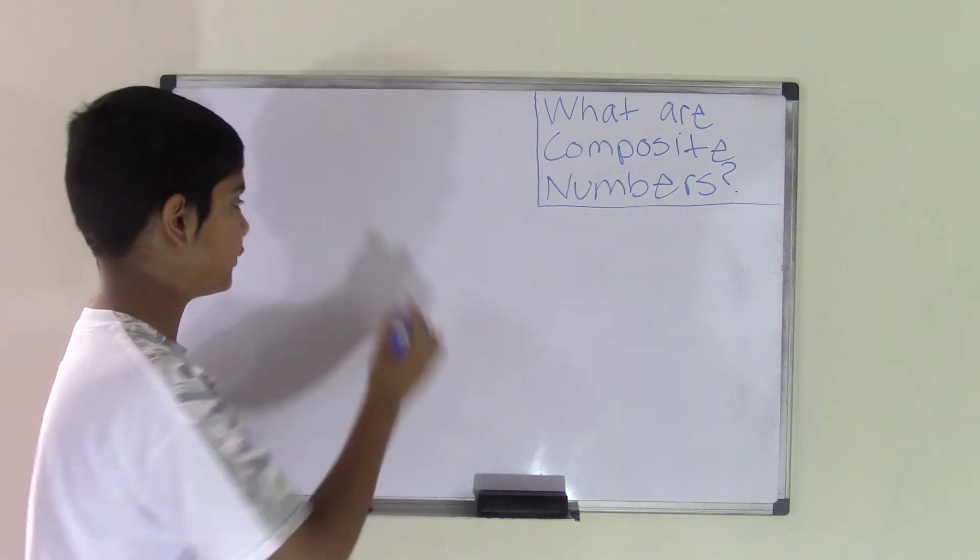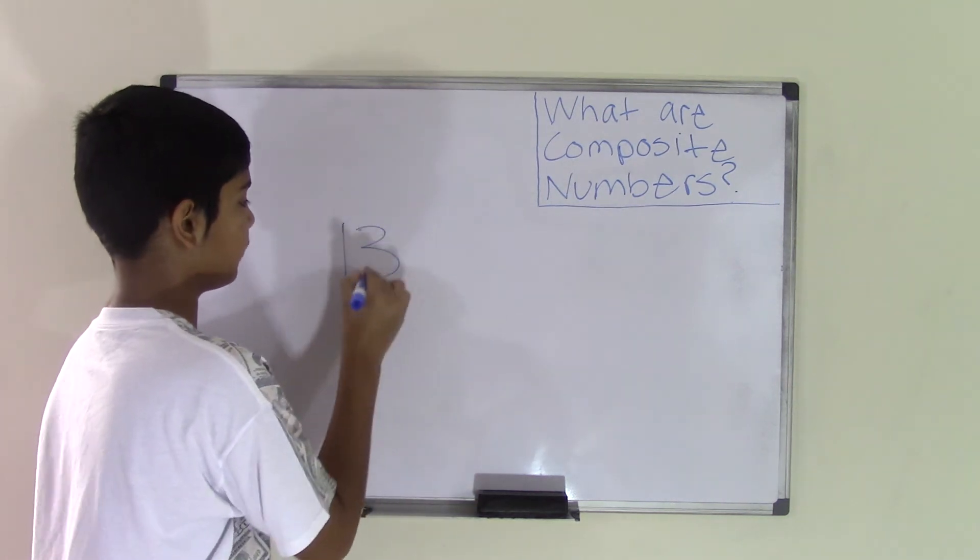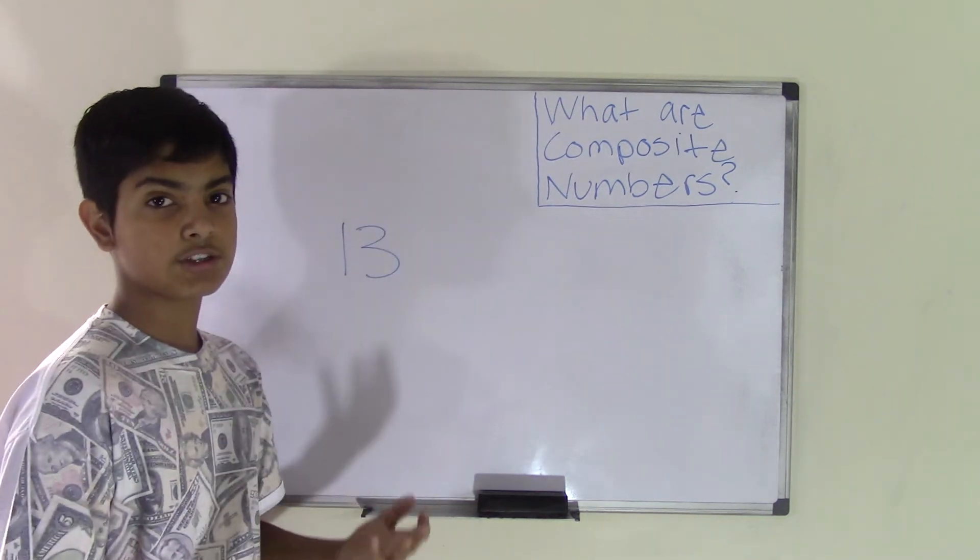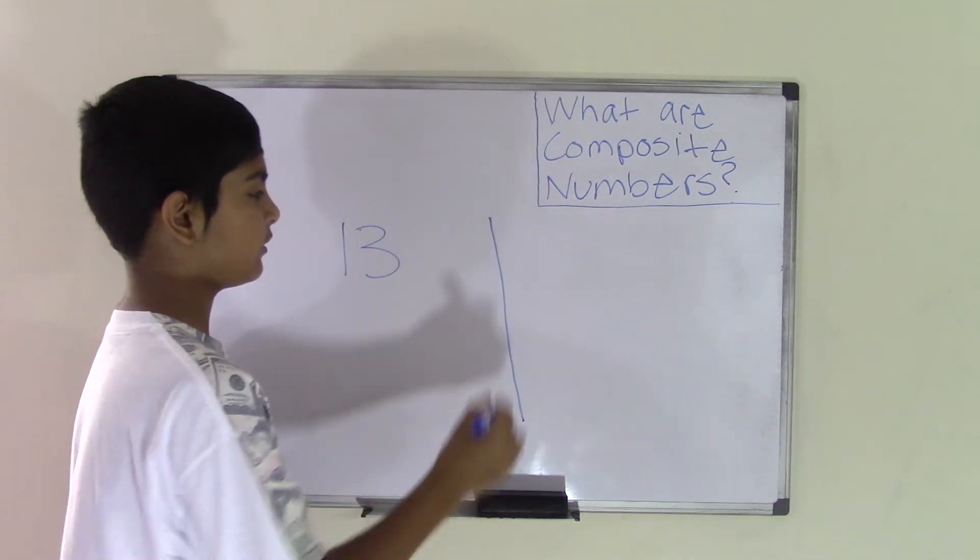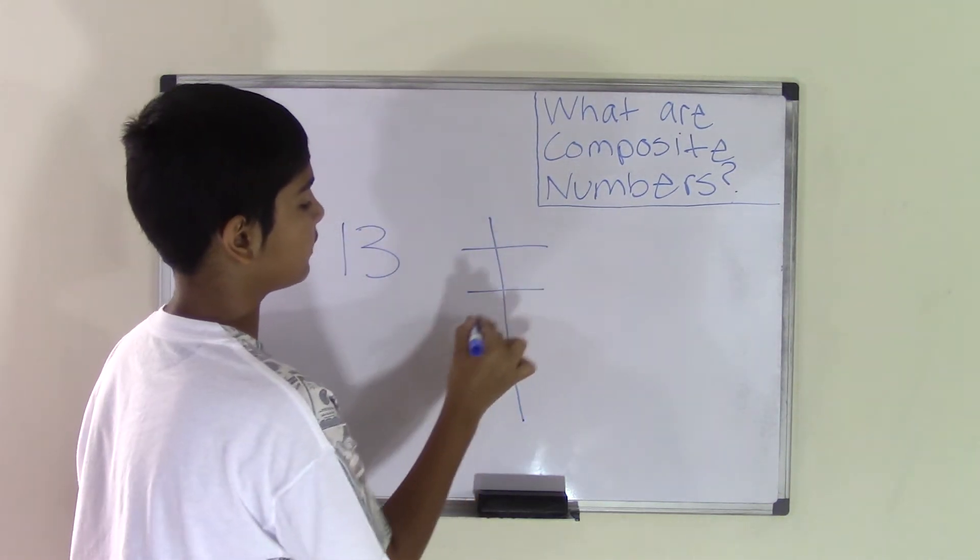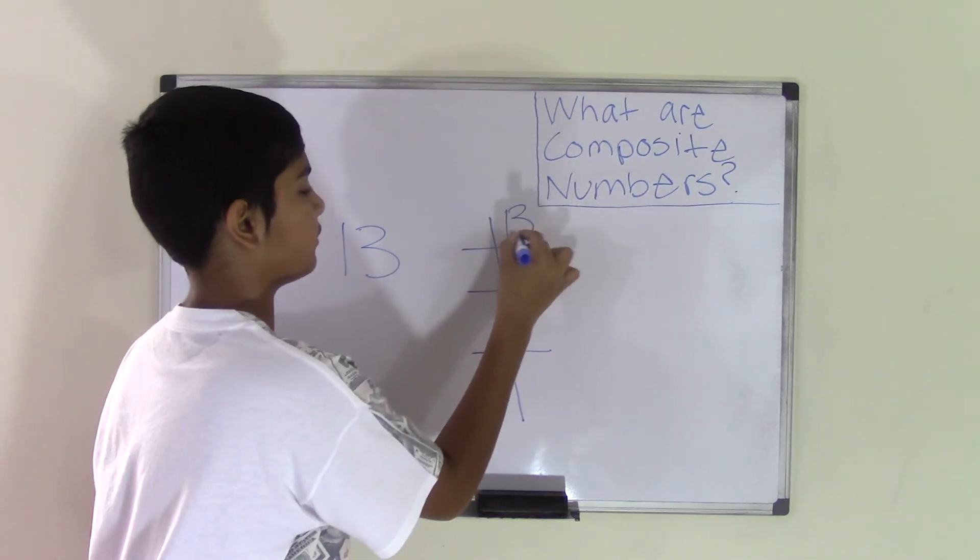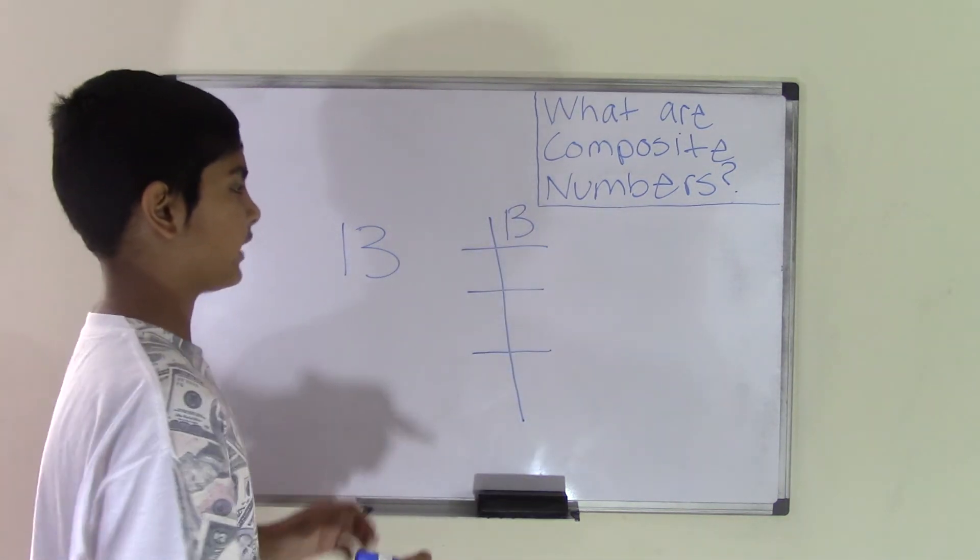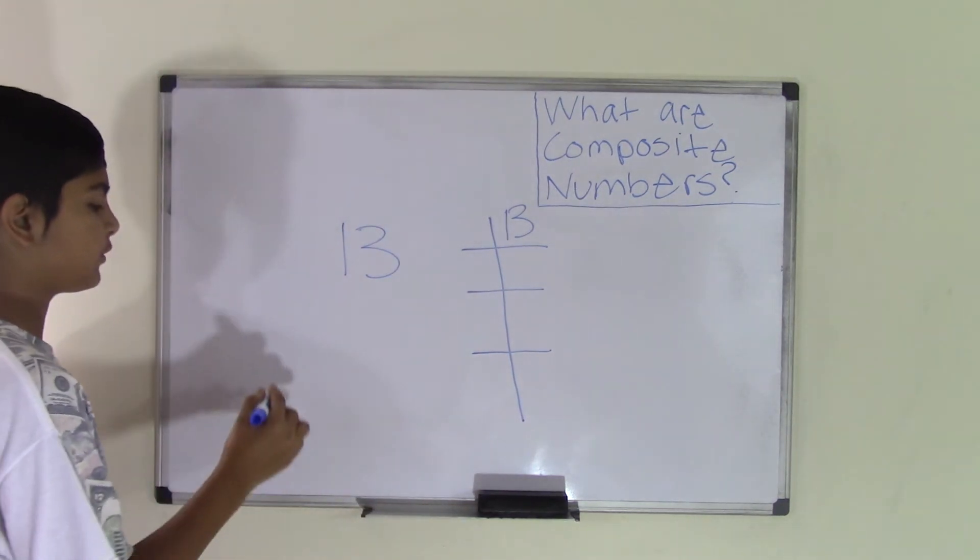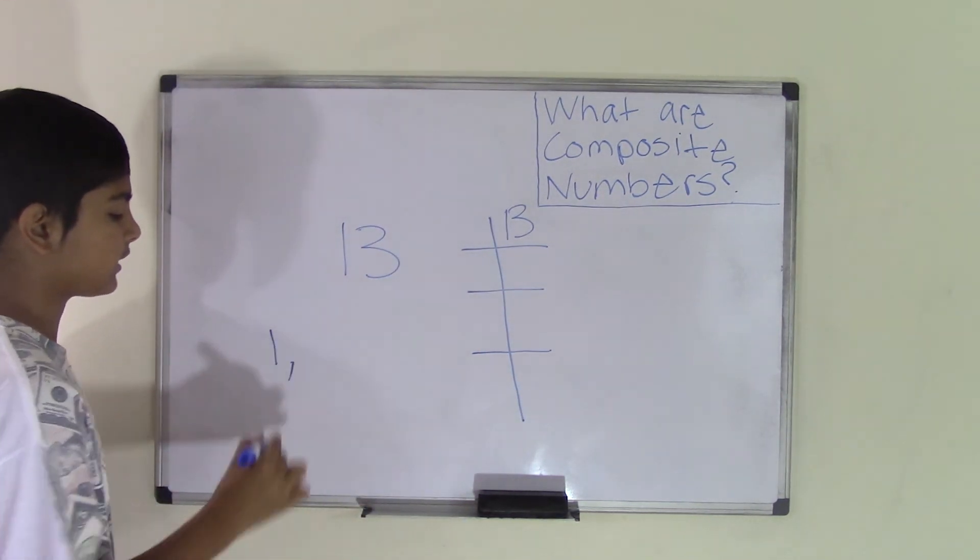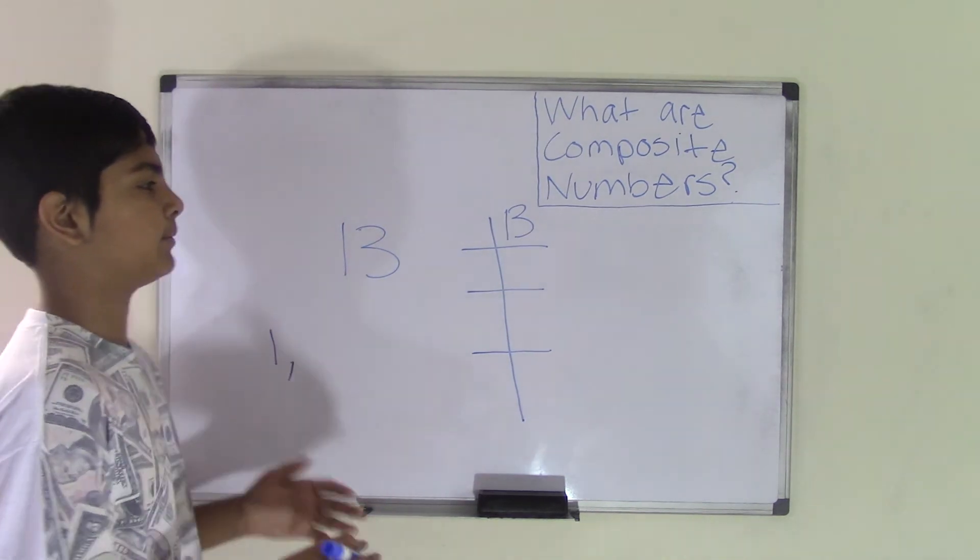So let's take the number 13. First we have to find the factors for this number, so we'll create a line. Next we create some floors, and we're going to be taking the number 13 all the way to the bottom floor. Before we do anything, again remember we have to add 1 into our list automatically because 1 times any number is that number.